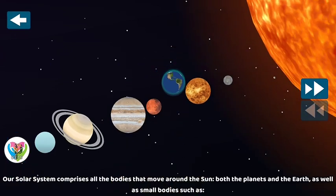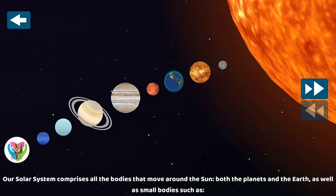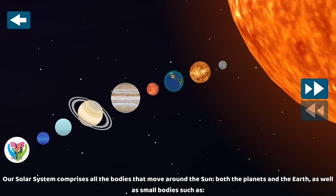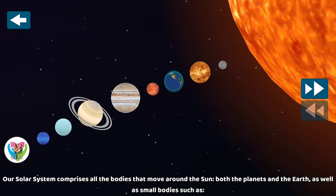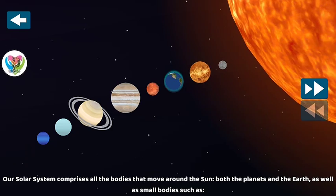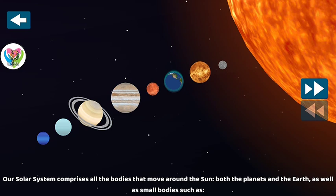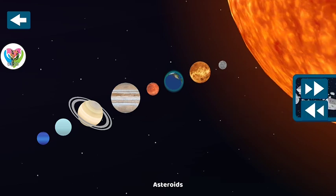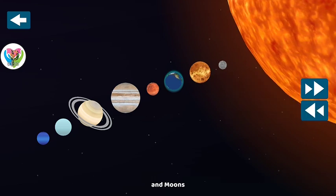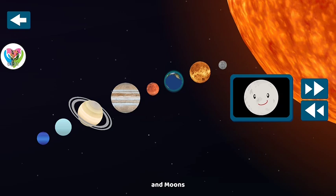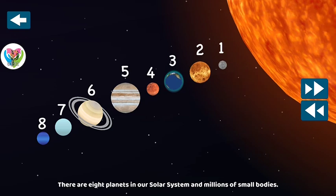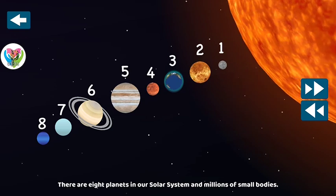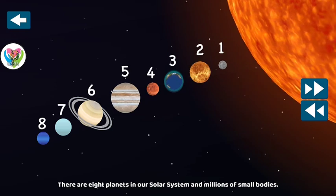Our solar system comprises all the bodies that move around the Sun — both the planets and the Earth, as well as small bodies such as meteors and moons. There are eight planets in our solar system and millions of other small bodies.